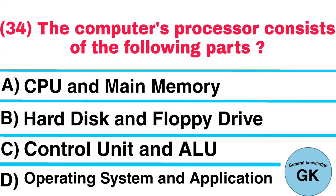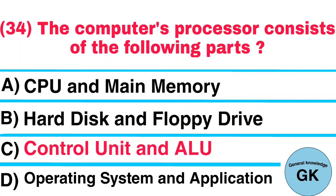Question number 34. The computer's processor consists of the following parts: A. CPU and main memory, B. Hard disk and floppy drive, C. Control unit and ALU, D. Operating system and application. Answer: Control unit and ALU.